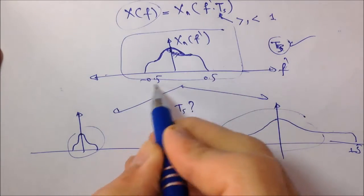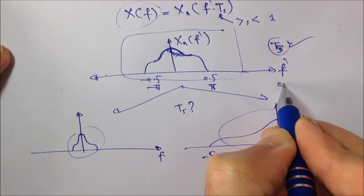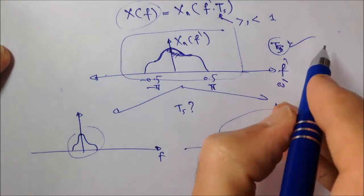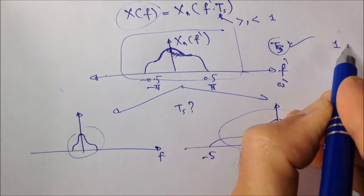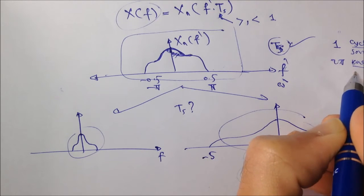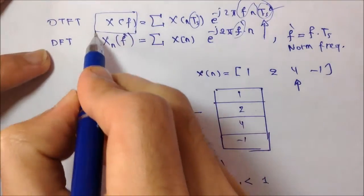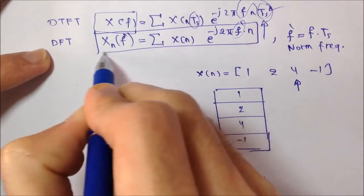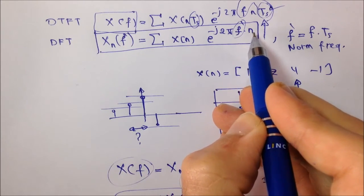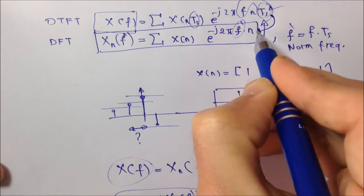So, pay attention to these critical values: 0.5, minus 0.5 or plus π, minus π, if we are talking in omega prime units. So, the normalized spectrum repeats itself each and every one cycle per sample, or 2π radian per sample duration. Because, if you look at the definition of the discrete Fourier transform, we have minus j 2π f prime n.